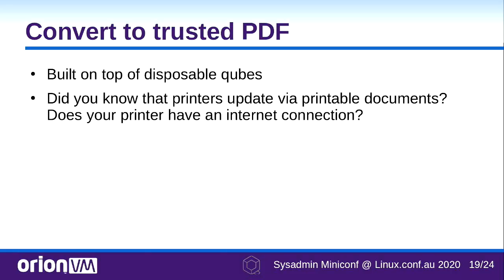Qubes is built on building blocks. The disposable qube building blocks were used to build the Trusted PDF utility. Who knows that printers can update via printable documents? Who prints untrusted documents on printers with network hardware? The Trusted PDF utility has a disposable qube convert an untrusted PDF into a trusted one — specifically by running a PDF renderer, outputting a bitmap of every pixel, then encoding those pixels back into a PDF. The idea is that you can't exploit that bitstream.